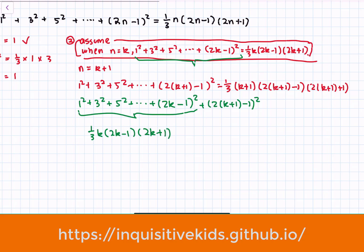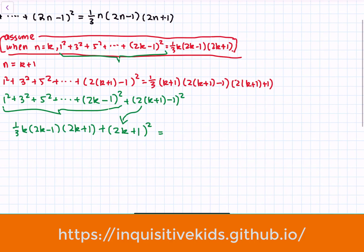Remember, we're just building off of our assumption for now. Plus the last term, which is 2k plus 1 squared, is equal to — on the right side — one-third times k plus 1 times 2k plus 1 times 2k plus 3.